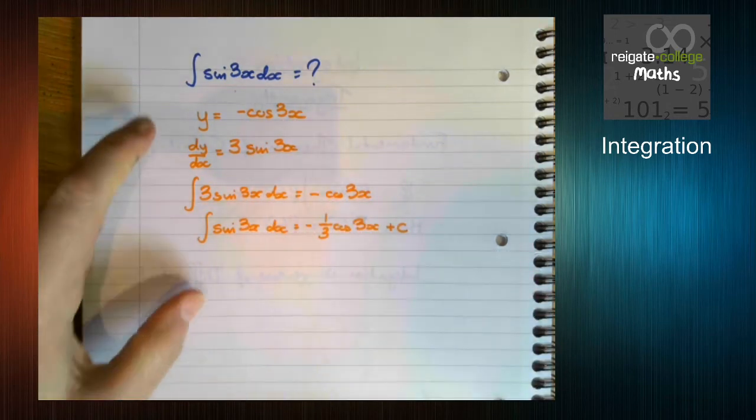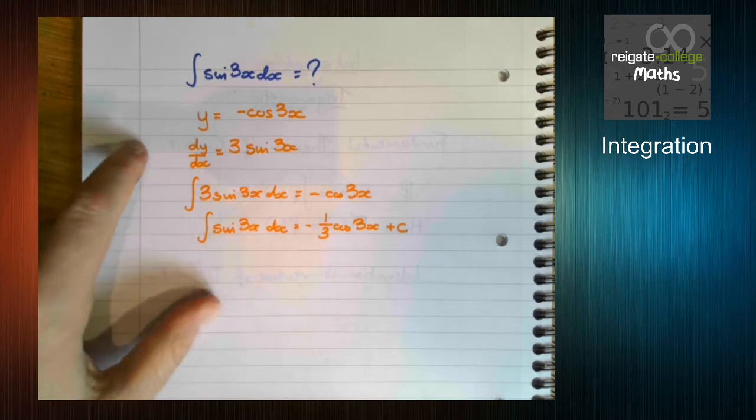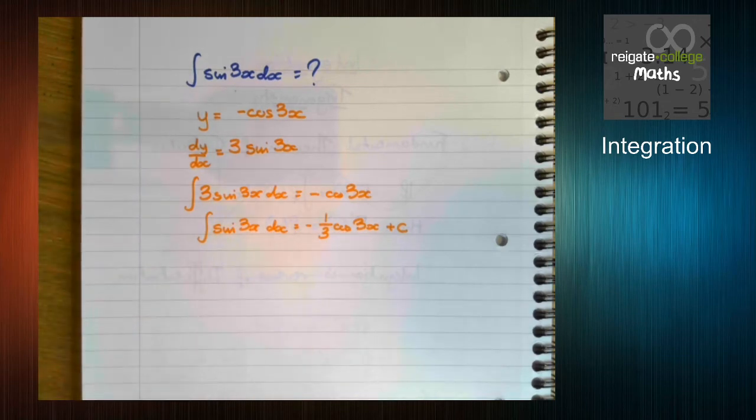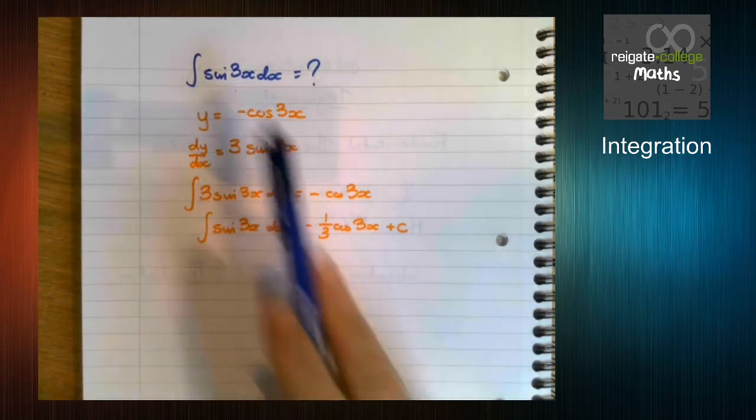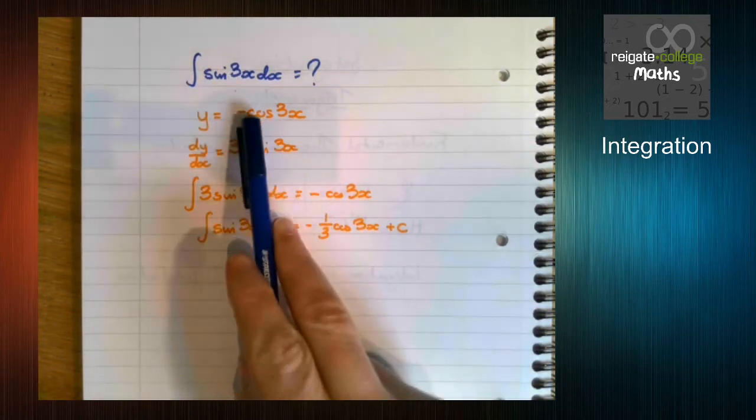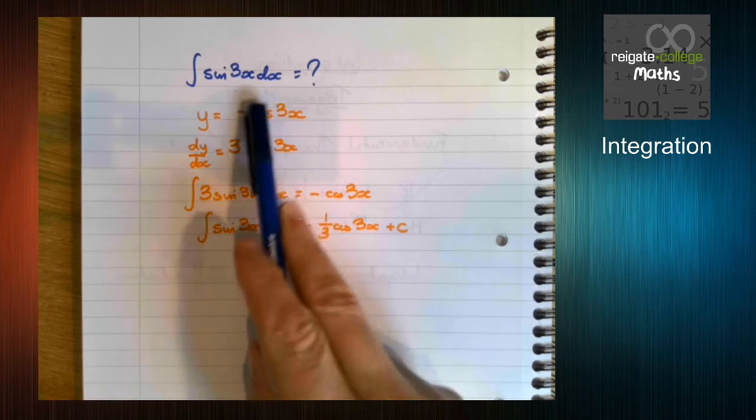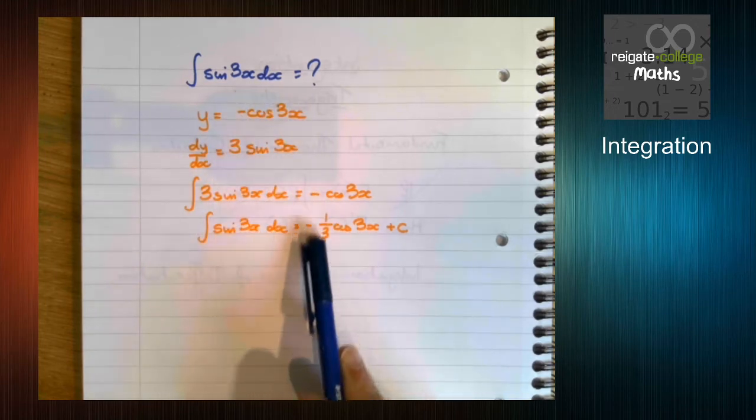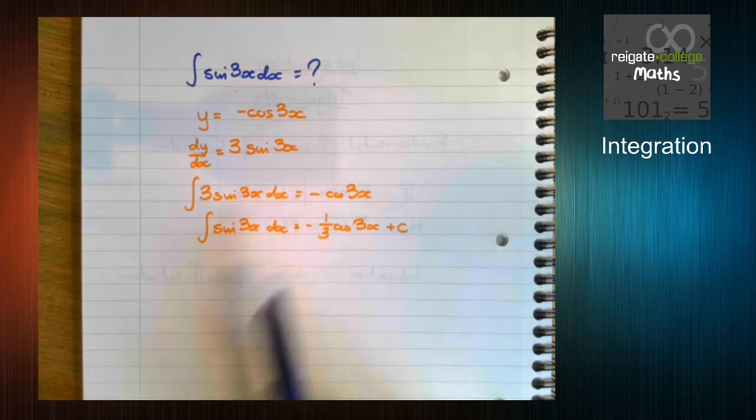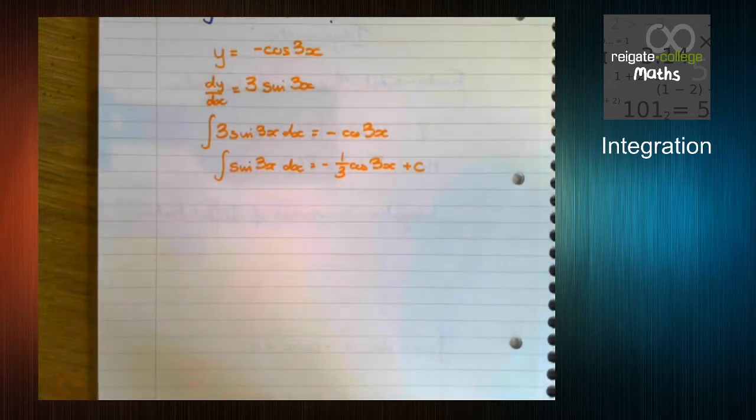This way of thinking about it will be very useful later on, but for trigonometry, on the whole, you can generally just remember the rules. So hopefully you can see a pattern. When we differentiate, we multiply by the thing on the front. When we integrate, we divide on the front.